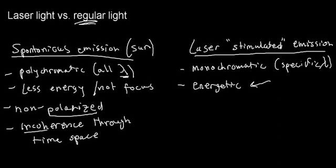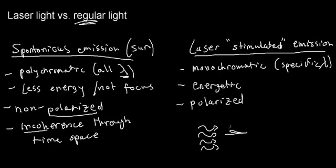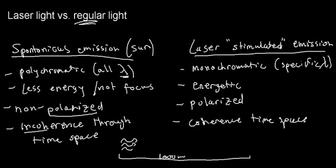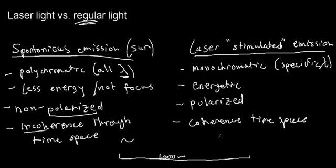Energy is focused very well. Also, instead of non-polarized, we get polarized light — all the photons, all their vectors, are pointing in the exact same direction. And because it's polarized, we also see coherence through time and space. That means if I take a range of, say, a thousand meters, my energetic, focused, monochromatic, polarized light is going to stay coherent and focused throughout that entire distance. That's what coherence in time and space means.